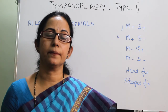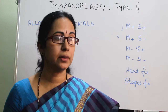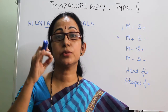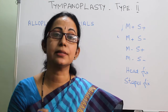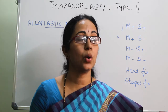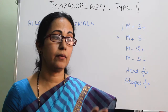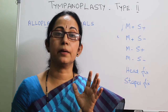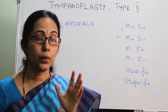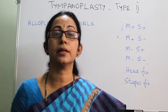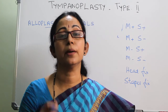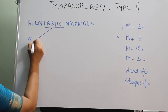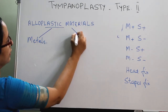An ideal graft material should be biocompatible, safe, and not transmit infections. It should be easily insertable into the middle ear, stable so it stays in place, and provide a maximum gain in sound transmission, since the aim is improvement in hearing. We can divide alloplastic materials into metals and non-metals.